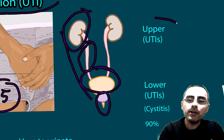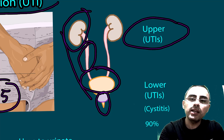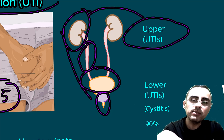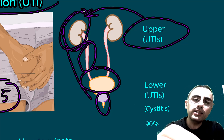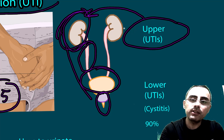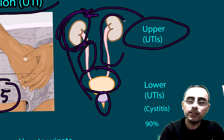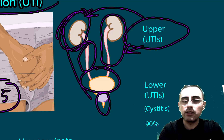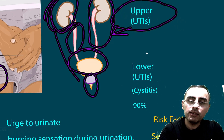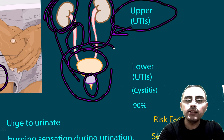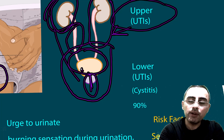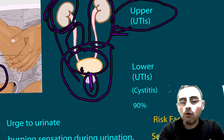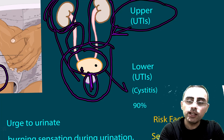Upper urinary tract infection means pyelonephritis — inflammation of the kidneys — and usually there is inflammation of the ureter as well. Lower urinary tract infection means cystitis and urethritis, which is inflammation in the bladder and urethra, or only in the bladder, which is called cystitis.